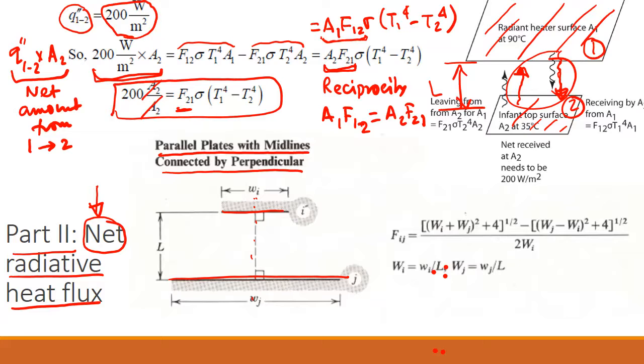If I call this surface as 1 and this surface as 2, then I can write the view factor F21 is equal to, just like here, W2 capital W2 is made up of small W2 over L, and W1 is made up of small W1 over L.